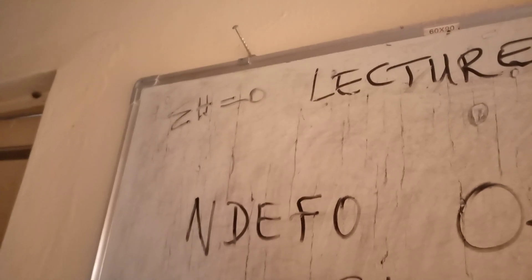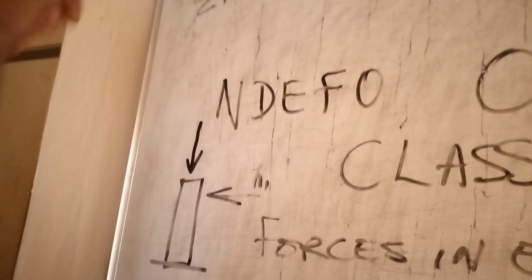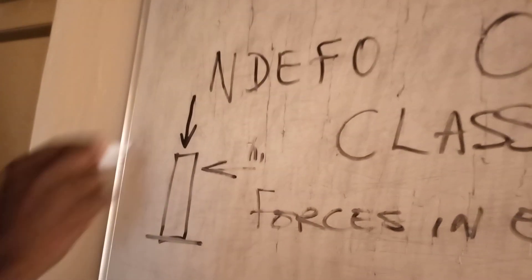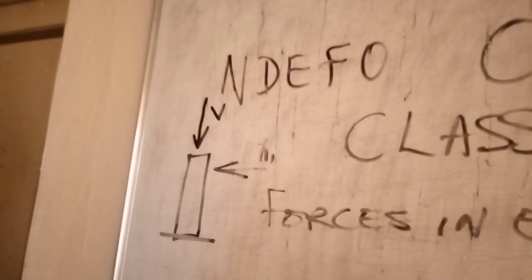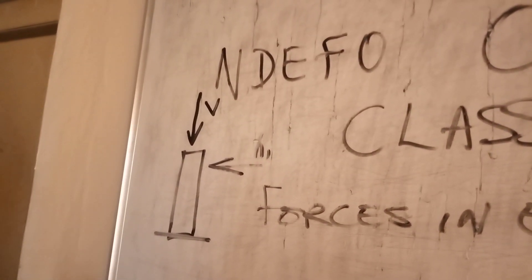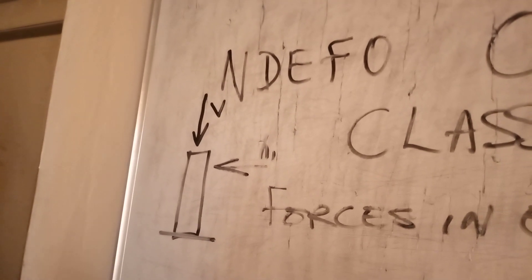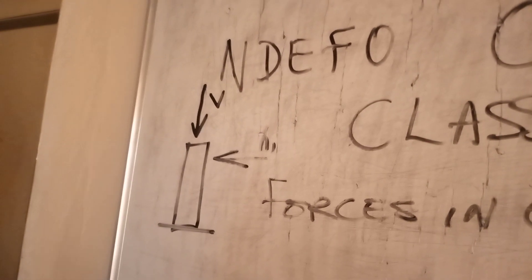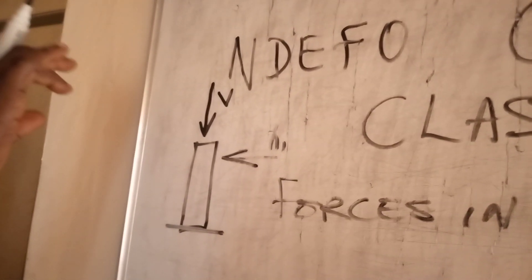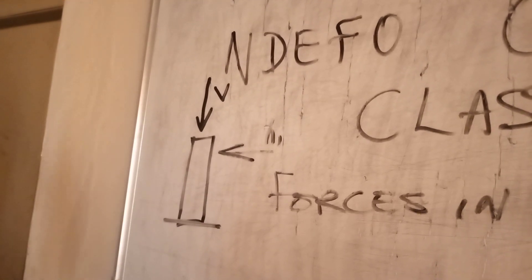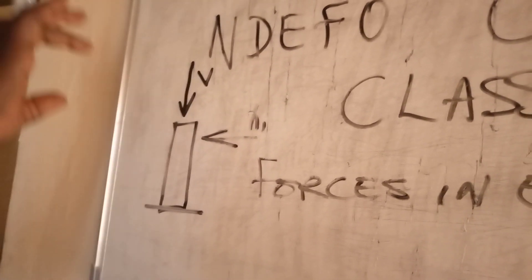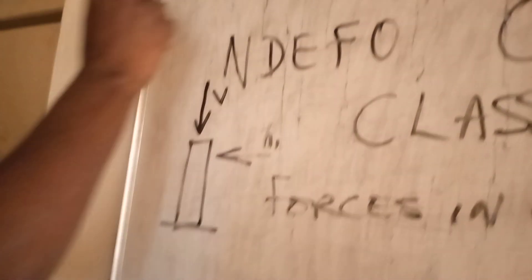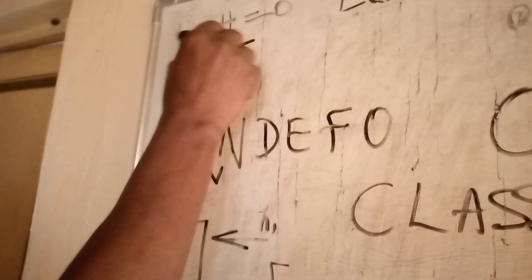If the object is pushed down vertically and the object resists the push — it didn't deform, it didn't move — it means the force pushing it down is equal to the resistance upward. That means the total vertical force is equal to zero.